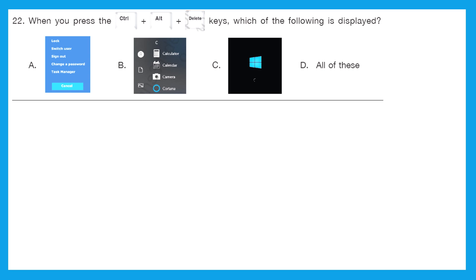Question 22: when you press the Ctrl Alt Delete keys, which of the following is displayed? Observe it carefully. Is it A, B, C or D? So Ctrl Alt Delete is a keyboard command used to restart computer. And in Windows, Ctrl Alt Delete starts Windows Security or Task Manager. So the right answer is option A. When we will press Ctrl Alt Delete keys together, we will get option A.